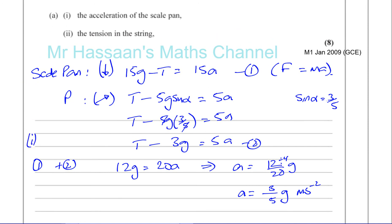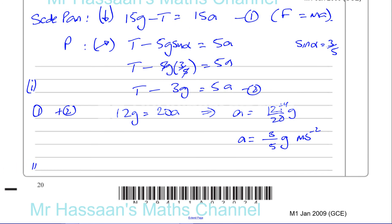Now, we've got to find the tension in the string, which is part 2. That's pretty simple. We know that T minus 3g equals 5a. We can use this equation if we want.